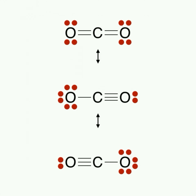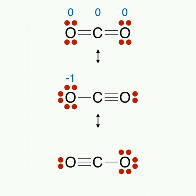To finish off, we'll look at the formal charges of the resonant structures of CO2. From our previous calculation, we know that in our first structure, the formal charges on all atoms are zero. In our second structure, our first oxygen brings six valence electrons and owns seven, giving it a formal charge of negative one. Carbon brings four and owns four, giving it a charge of zero. Our second oxygen brought six and owns five, giving it a formal charge of positive one.